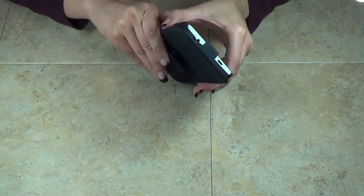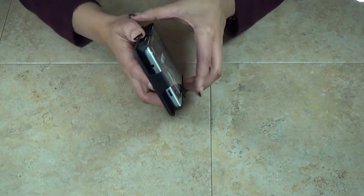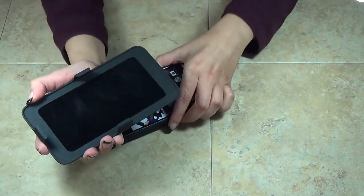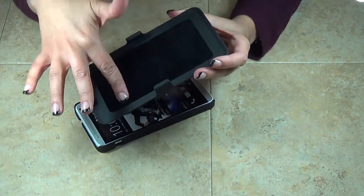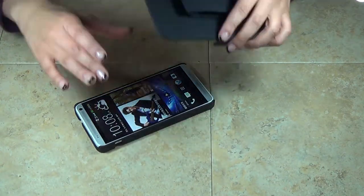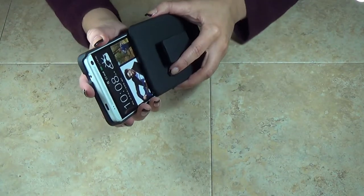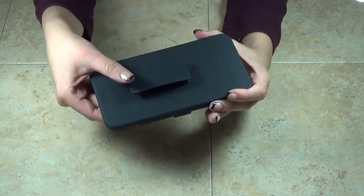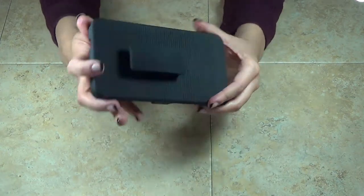Now if you slide this part right off here, it has this little velvety center. This is so your screen stays protected. You just slide this right on and then you can clip it onto your belt clip, and your phone stays protected.